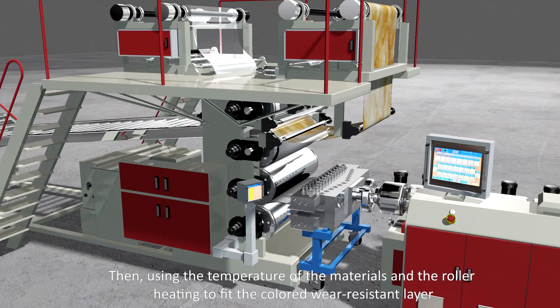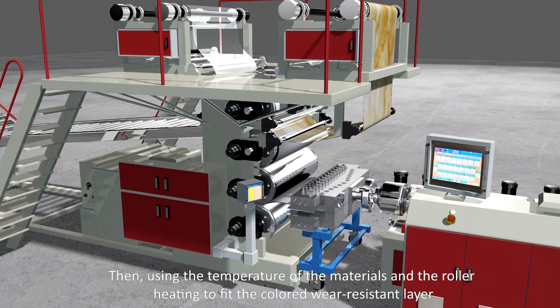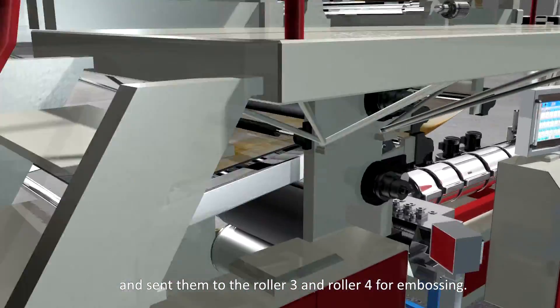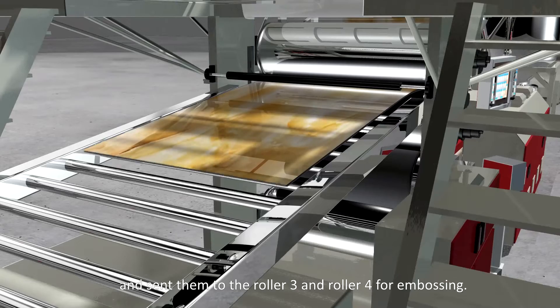Then use the temperature of the materials and the roller heating to fit the colored wear-resistant layer and send them to roller 3 and roller 4 for embossing.